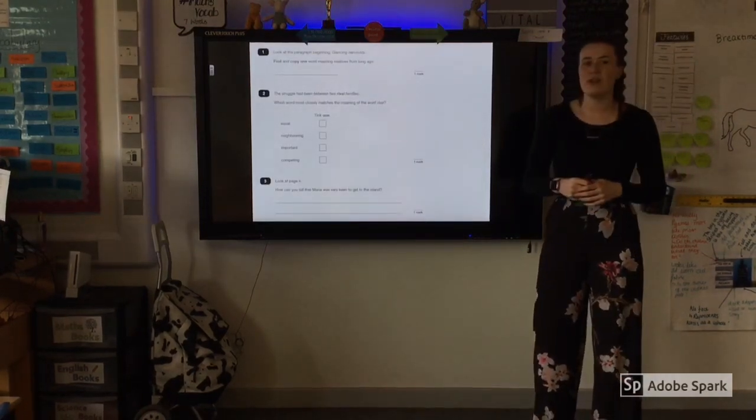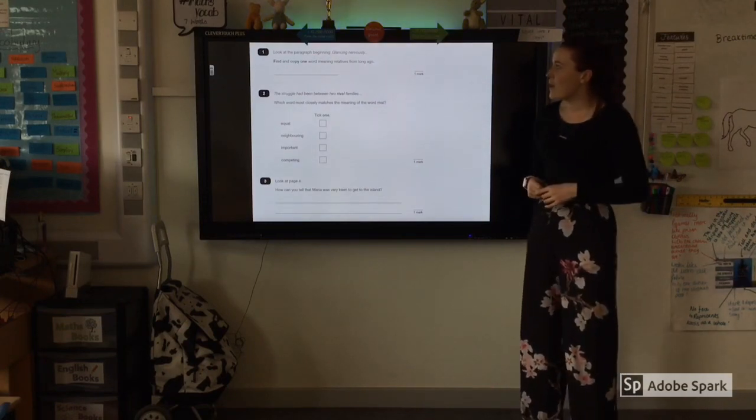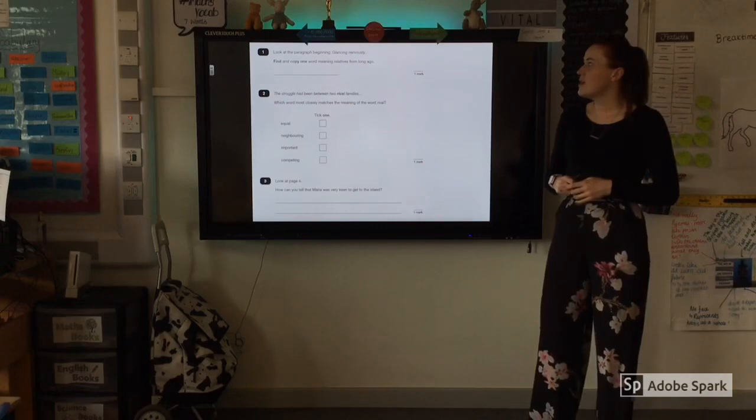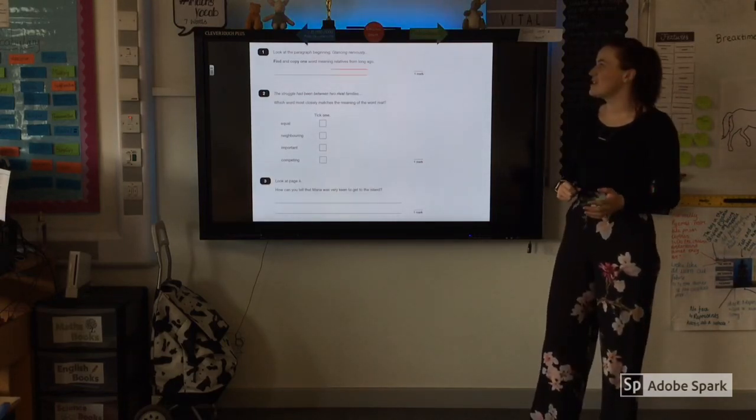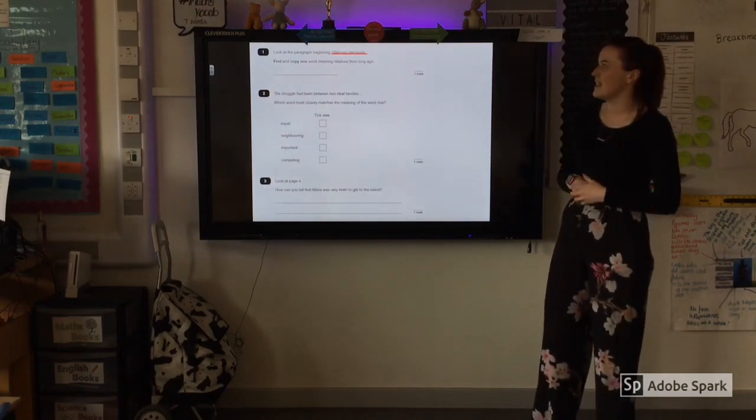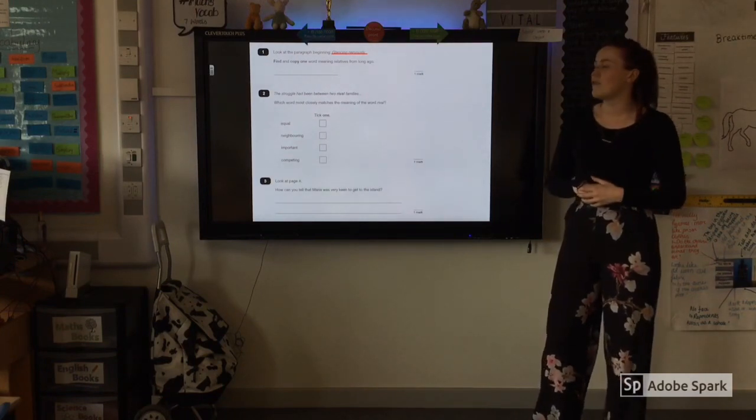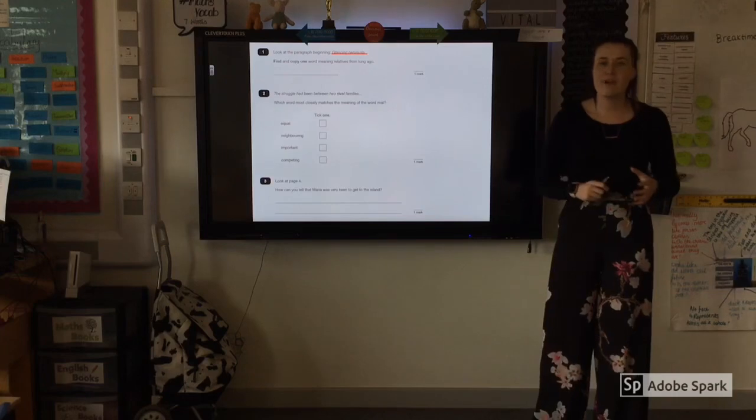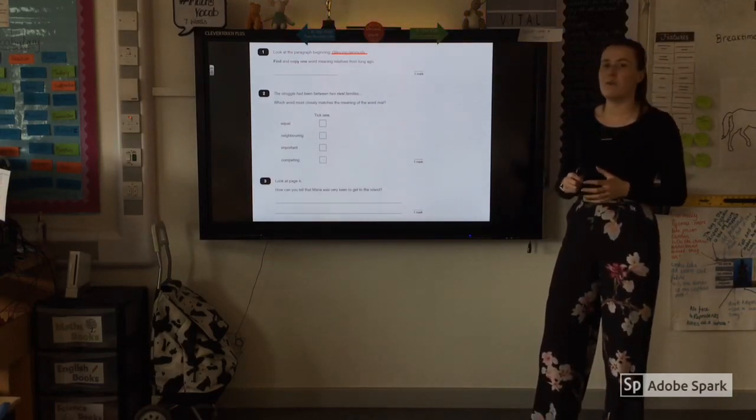So now having a look at some of the questions. The first question, look at the paragraph beginning glancing nervously. Find and copy one word meaning relatives from long ago. It's a nice question because it tells you exactly where in the text you need to look. You need to find the paragraph that begins glancing nervously. Find and copy one word which means relatives from long ago. For this question, you should dive straight back into your text. Find that part and read around it. You're looking for a synonym for that meaning there.